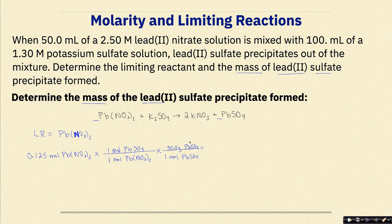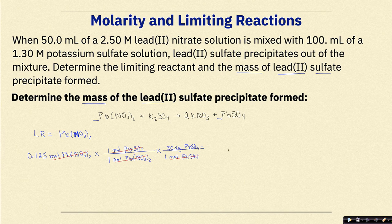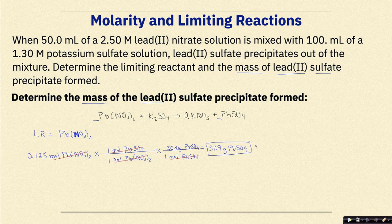Before doing the final calculation, I confirm all units cancel: moles of Pb(NO₃)₂ cancels, then moles of PbSO₄ cancels, leaving grams of PbSO₄. Final calculation: 0.125 × 303 = 37.9 grams of PbSO₄. So when all moles of lead(II) nitrate are consumed, we produce 37.9 grams of PbSO₄, to the correct number of significant figures.